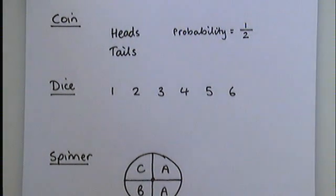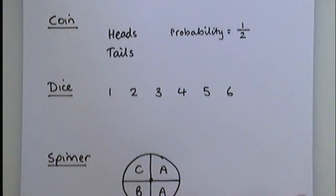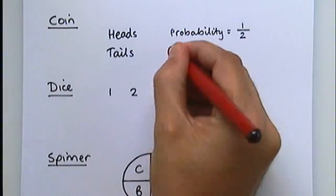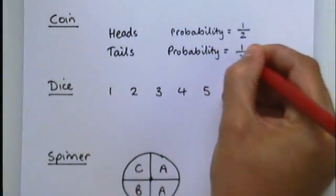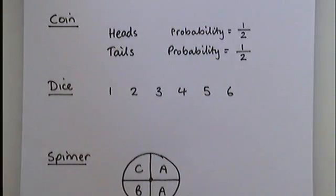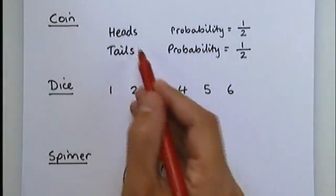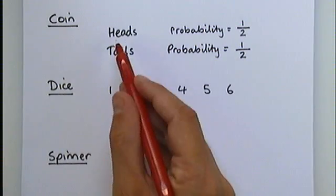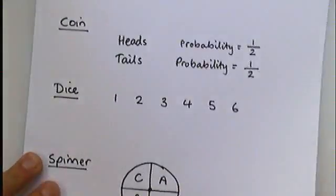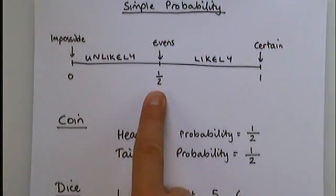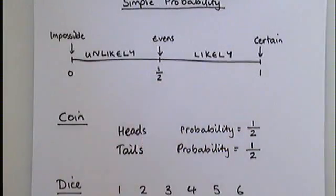If you always try to make your probability statement and ask yourself 'how many is it out of,' you'll usually get to the right answer. Equally, the probability of getting tails is also 1 out of 2. There's only one way you can get tails on a coin — only one side says tails, the other side says heads. So if we look back on our probability scale, we can see that these things are both evenly likely — evens. A 50% chance you will get heads, a 50% chance you will get tails.